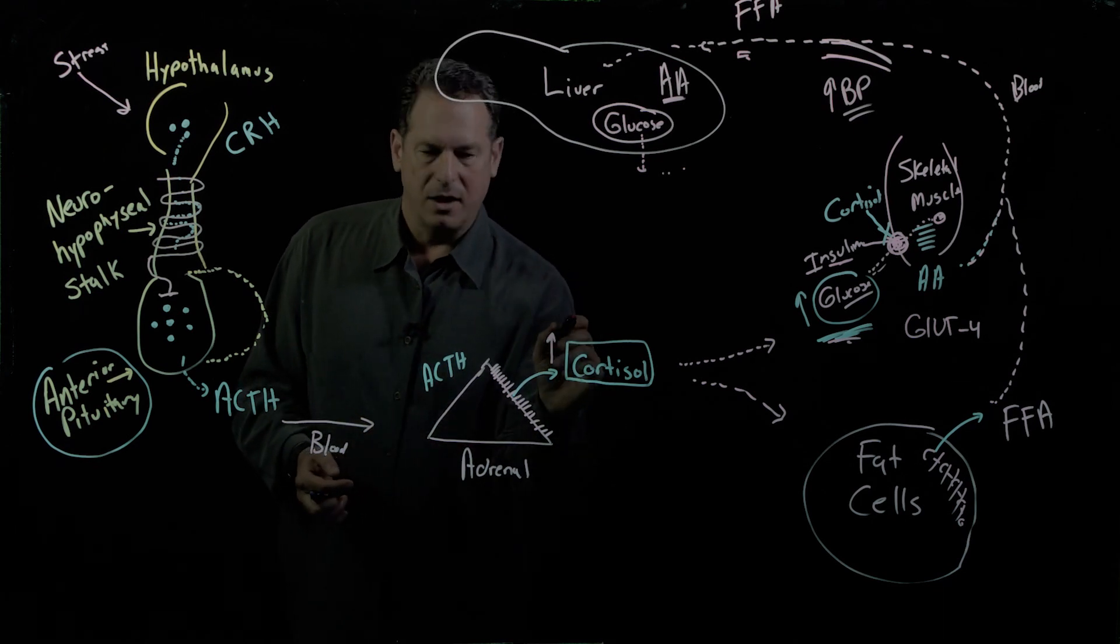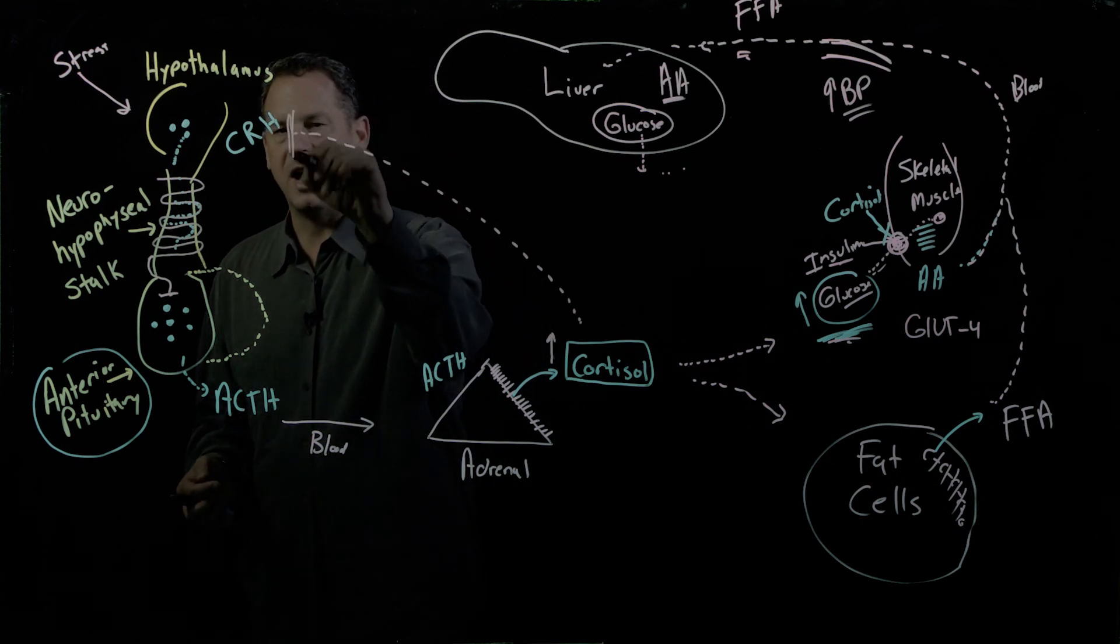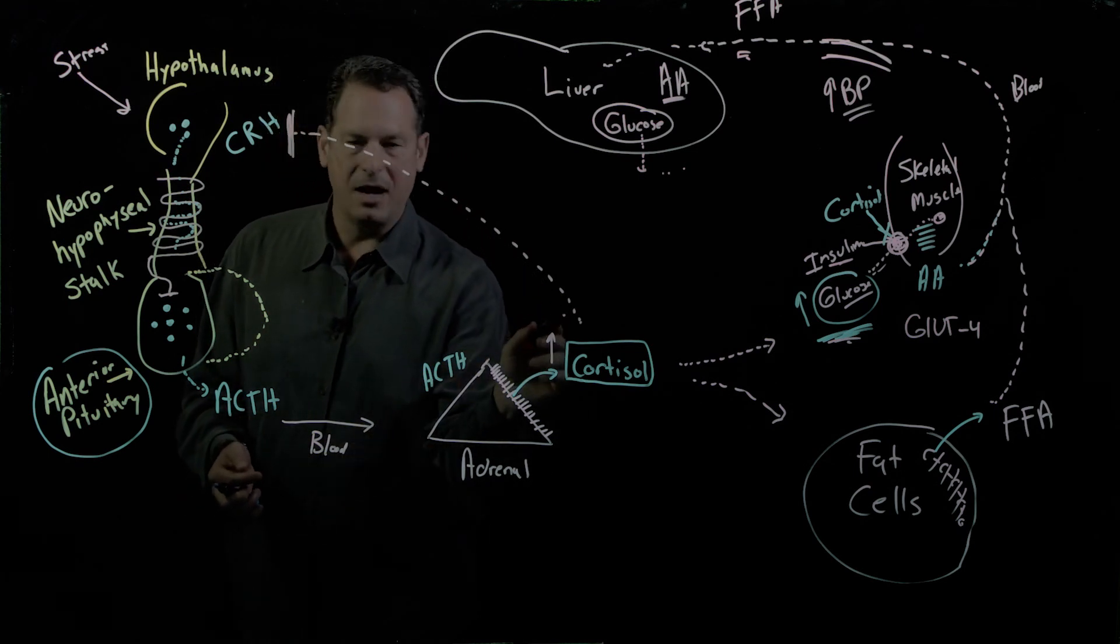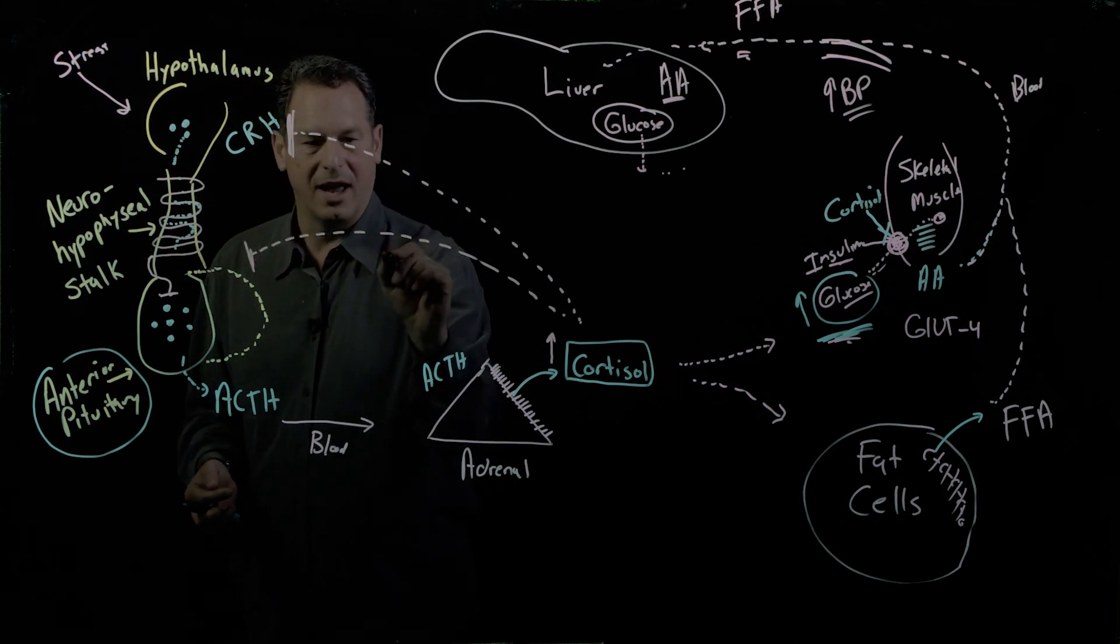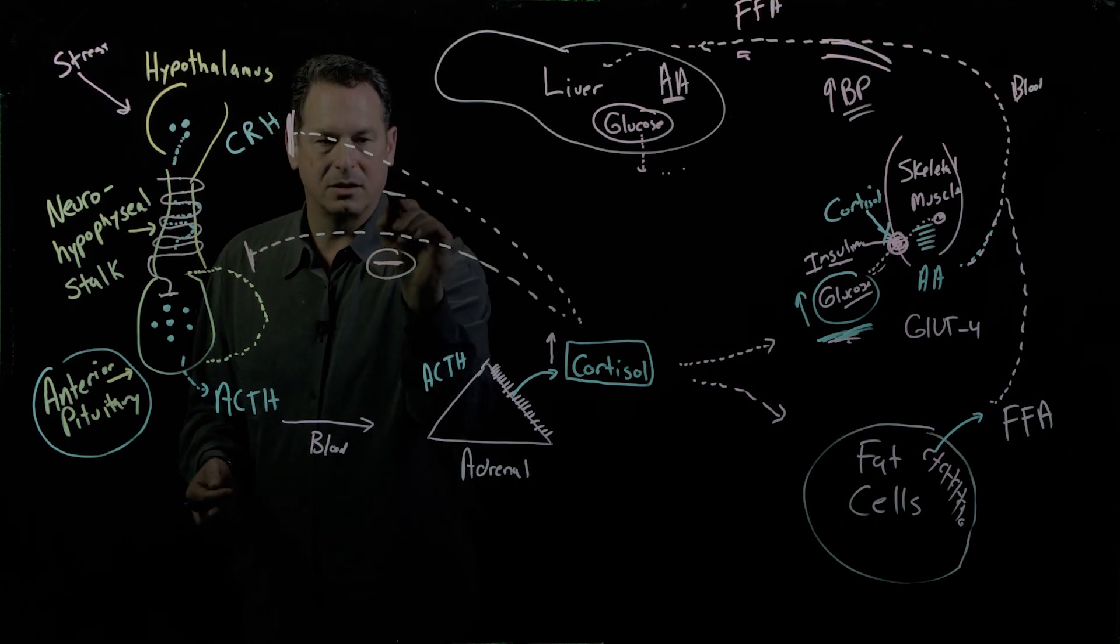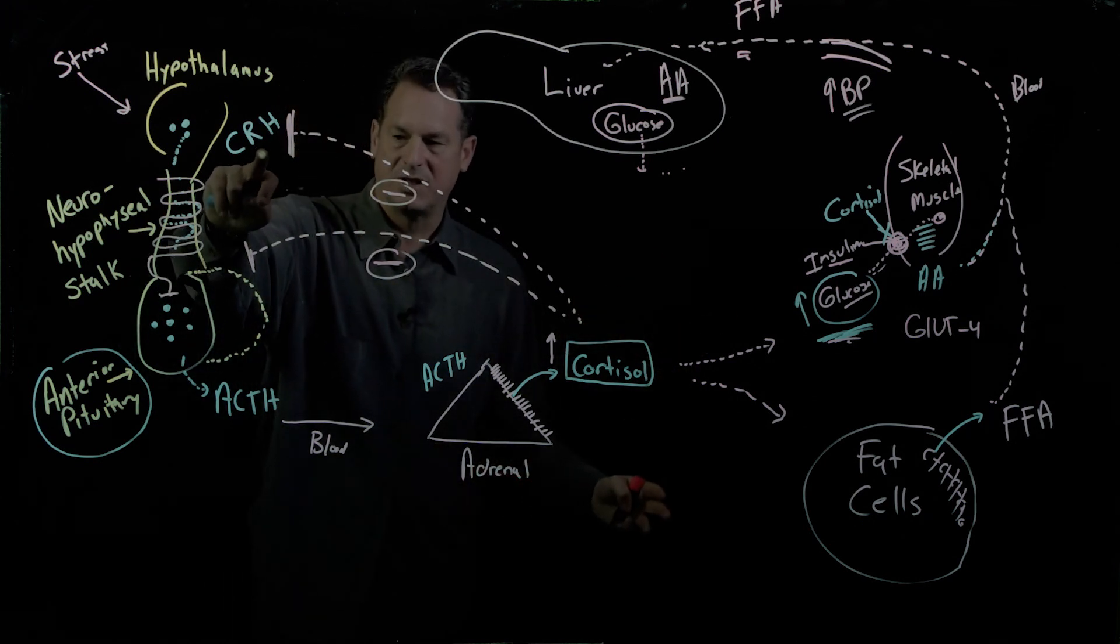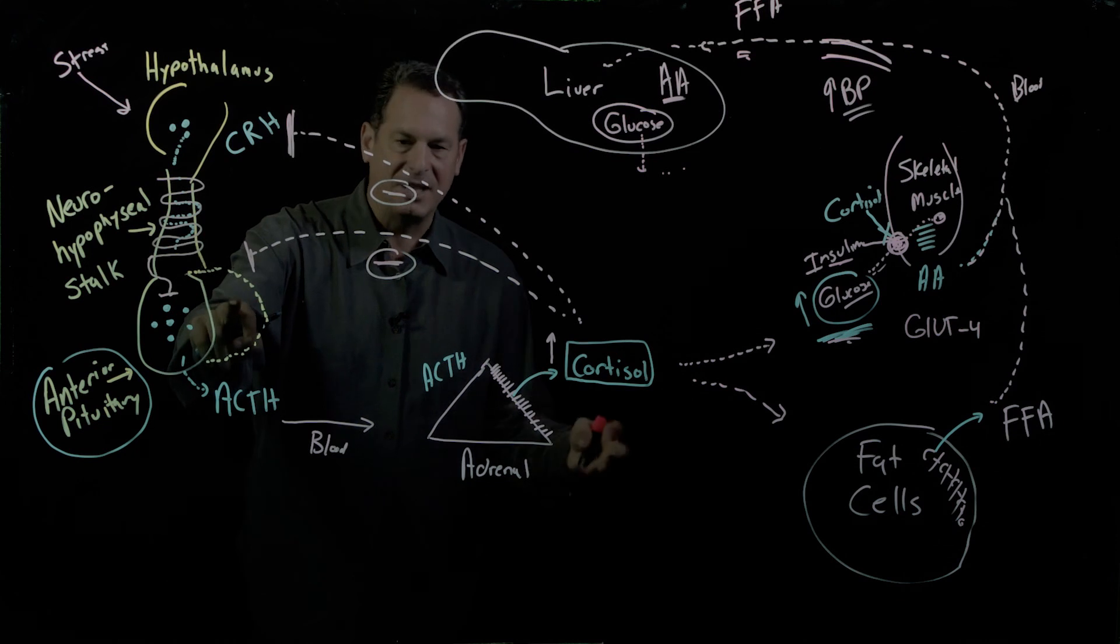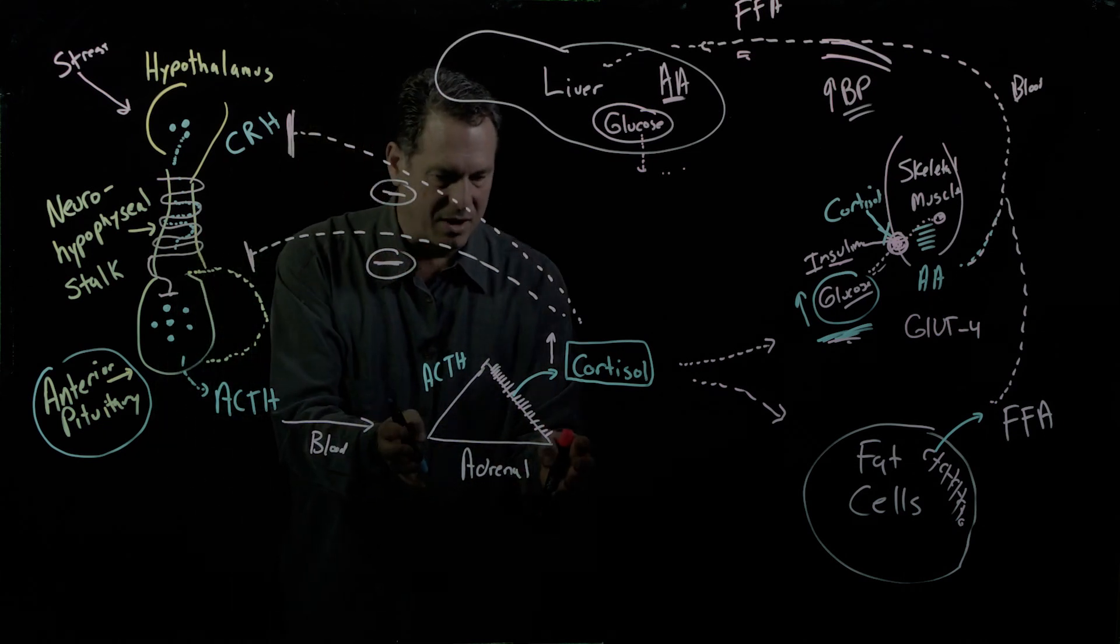When cortisol is elevated, that comes back in blood going to the hypothalamus and in blood at the anterior pituitary, and it inhibits the subsequent release of CRH and ACTH. Hence, you don't have the stimulus to make more cortisol.